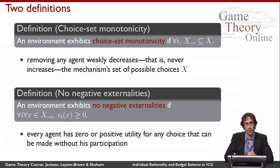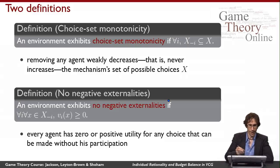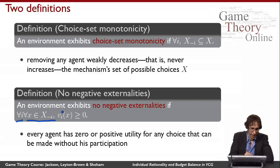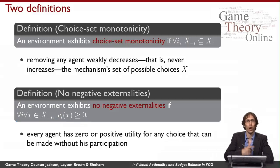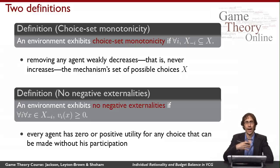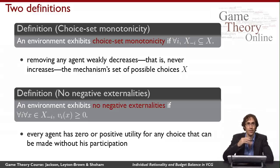The second assumption is called no negative externalities. We have no negative externalities if for all agents and all choices that can be made without that agent, the agent's own valuation for each of these choices is non-negative. In other words, when you get dropped from the mechanism it isn't possible for the mechanism to choose something that actually causes you pain. It might choose something you like less well than what it chooses when you are present, but it can't choose something for which you have negative utility.